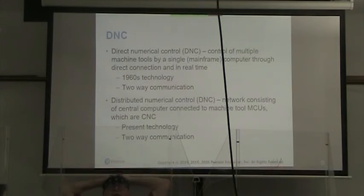We can have direct numeric control where multiple machine tools are controlled by a single mainframe computer by direct connection and in real time. This is 1960s type technology and has two-way communication. Distributed numerical control, also called DNC, has a network with a central computer that's connected to our machine tool machine control units, which are then CNC. That's our present day technology, and that also offers two-way communication.